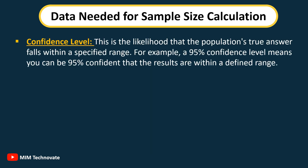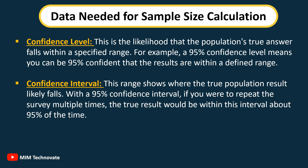Confidence level: this is the likelihood that the population's true answer falls within a specified range. For example, a 95% confidence level means you can be 95% confident that the results are within a defined range. Confidence interval: this range shows where the true population result likely falls. With a 95% confidence interval, if you were to repeat the survey multiple times, the true result would be within this interval about 95% of the time.